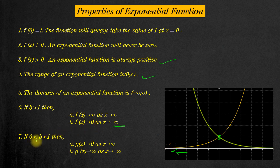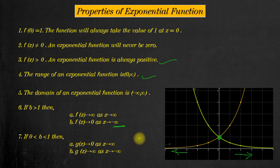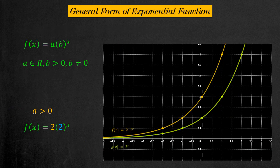For the last property, when the base is greater than zero but less than one, refer to the green curve. As x approaches infinity, the curve approaches zero. Similarly, as x approaches negative infinity, the curve approaches positive infinity.